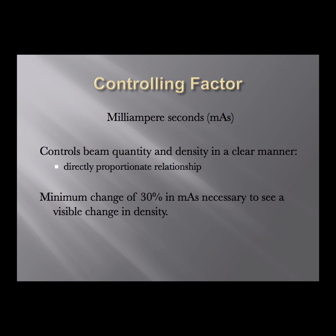The textbook is correct that it's not exact, but for all intents and purposes it's close enough. If you double your mAs, you're going to see a doubling in radiographic density. If you halve your mAs, you're going to see half the radiographic density — the film will be twice as light. To restate: double your mAs and your film will be twice as dark; halve your mAs and your film will be twice as light.